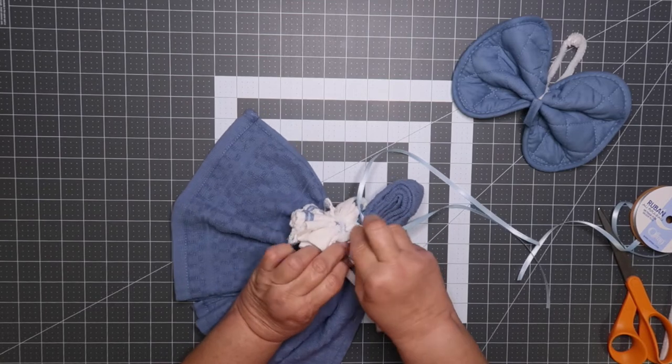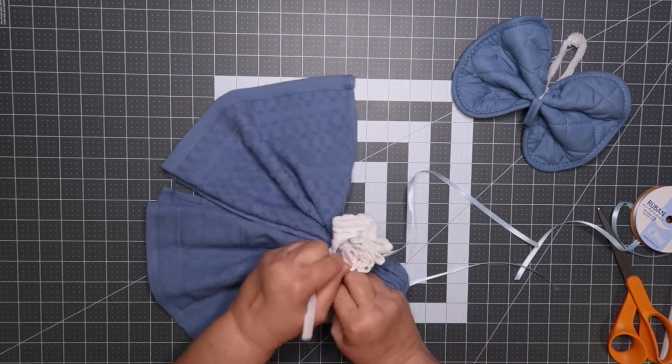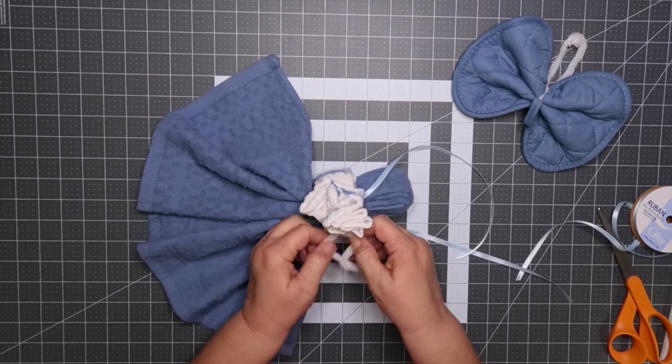First I do use the chenille stem to secure the arms, but once the ribbon's been attached then I remove it.